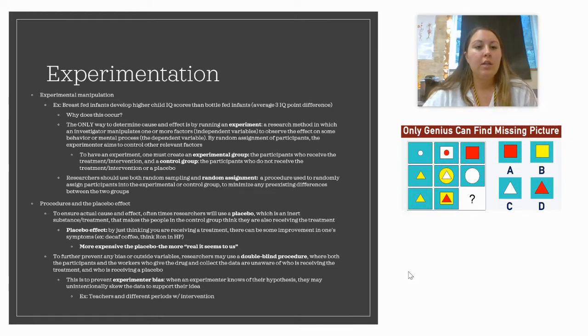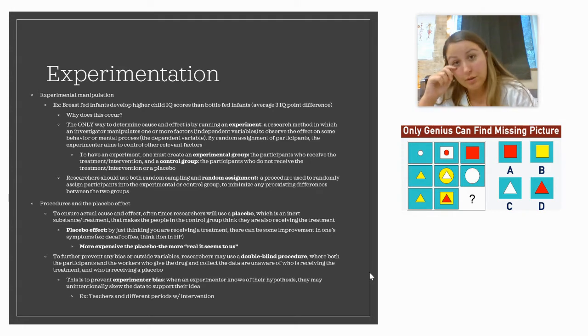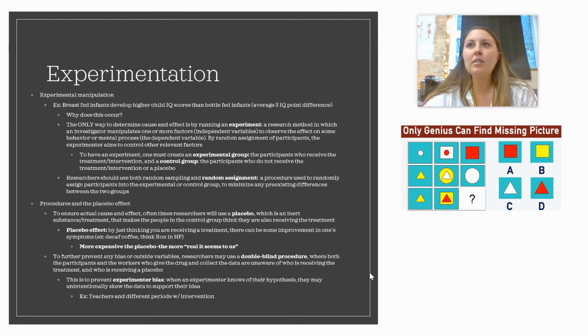Okay, then experimentation. So experimental manipulation. There's an example in your textbook about how breastfed infants develop higher child IQ scores than bottle-fed infants with an average of three IQ points. Why does this occur? They did some correlational research and found that there was a correlation in that babies that were breastfed for a long amount of times typically had higher IQ scores than babies that were not. But we didn't know why, and we couldn't isolate for sure that it was the breast milk. The only way for us to do that is to conduct an experiment, which is a research method in which an investigator manipulates one or more factors to observe the effect on some behavior or mental processes.